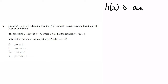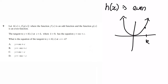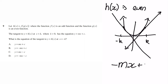Next, the tangent to h(x) at x equals k has equation mx plus c. What is the equation at x equals negative k? Since h(x) is even, the tangent at negative k is the mirror image, which has slope negative m. Therefore our answer is B.